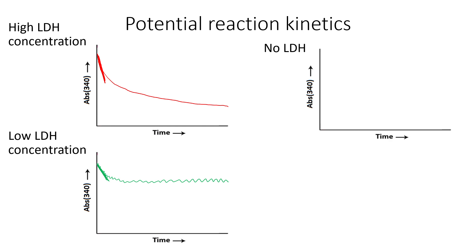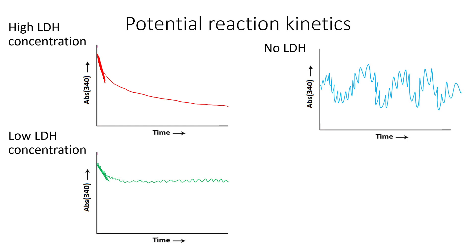In some of your samples you might not have any LDH, and that's expected — things like your wash or some of your later elutions. There you will see essentially a line that goes straight across, because you're not consuming the NADH substrate over time. The absorbance at 340 will be a fairly low constant reading, and because the computer zooms in, you'll see some noisy data that oscillates up and down, but overall it still essentially traces a straight line. A trend like that is a perfectly acceptable reading showing you have no LDH in that sample.